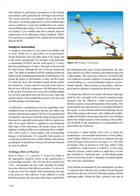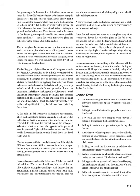Avoid looking straight down in front of the aircraft. Continually cross-check attitude, trim, rotor RPM, and airspeed. At the altitude recommended by the manufacturer (position 3), begin the flare with aft cyclic to reduce forward airspeed and decrease the rate of descent. Maintain heading with the anti-torque pedals. During the flare, maintain rotor RPM in the green range. Care must be taken that the cyclic be moved rearward neither so abruptly that it causes the helicopter to climb, nor so slowly that it fails to arrest the descent, which may allow the helicopter to settle so rapidly that the tail rotor strikes the ground.